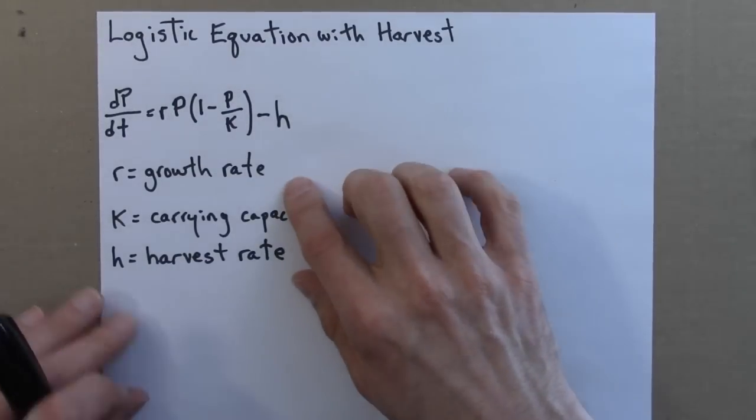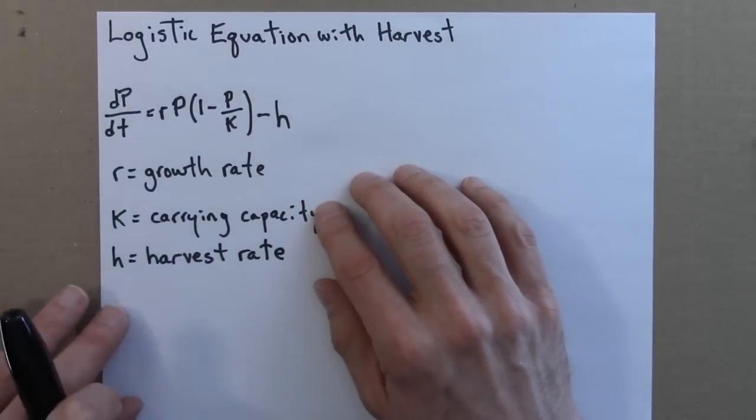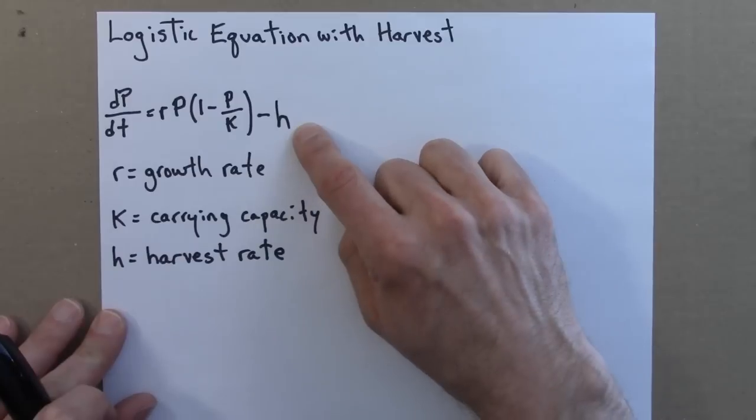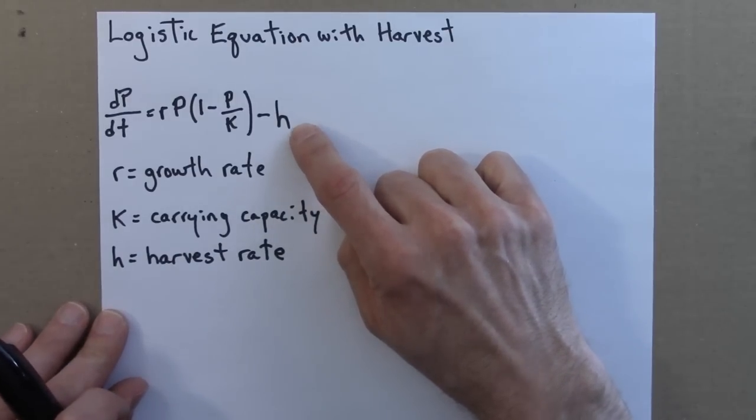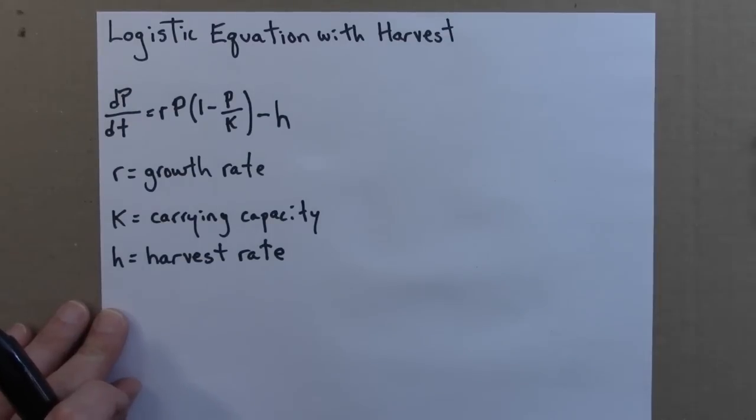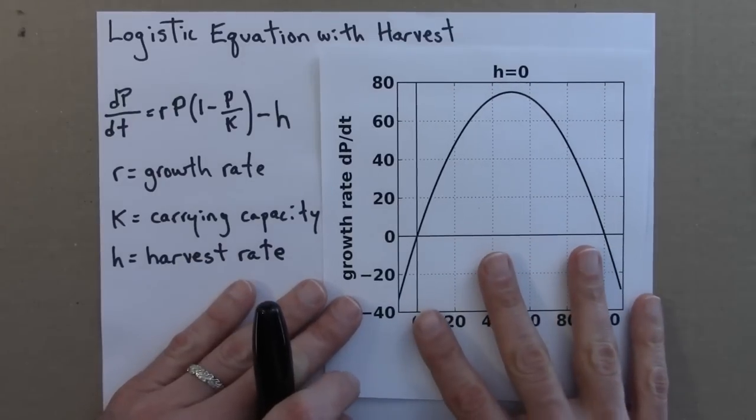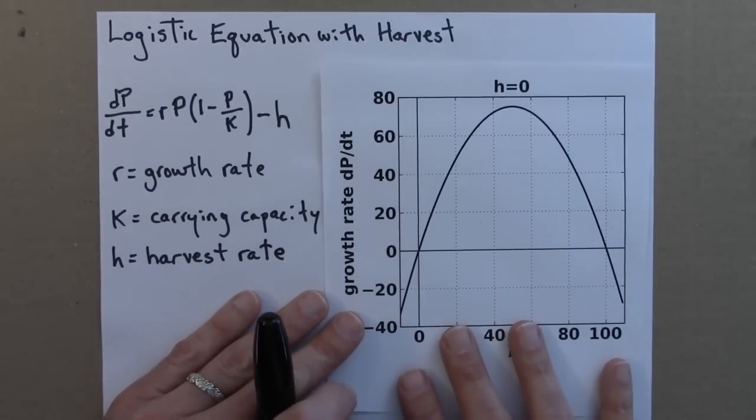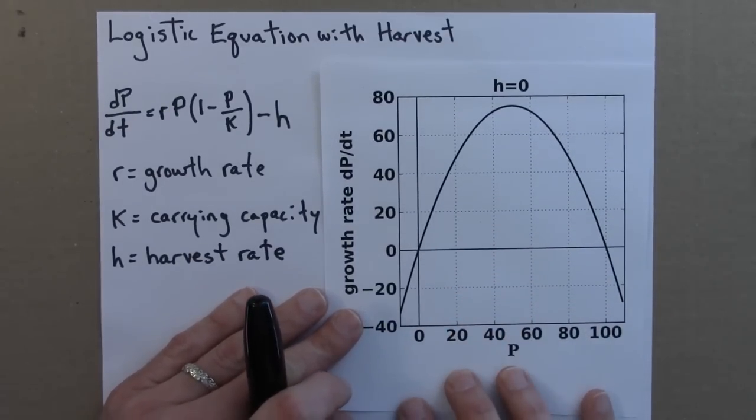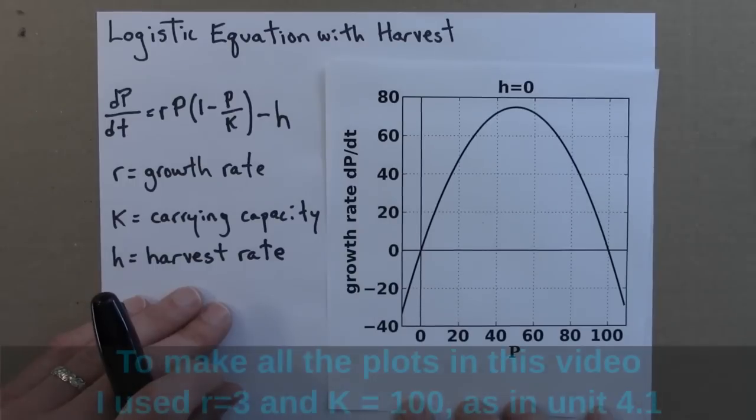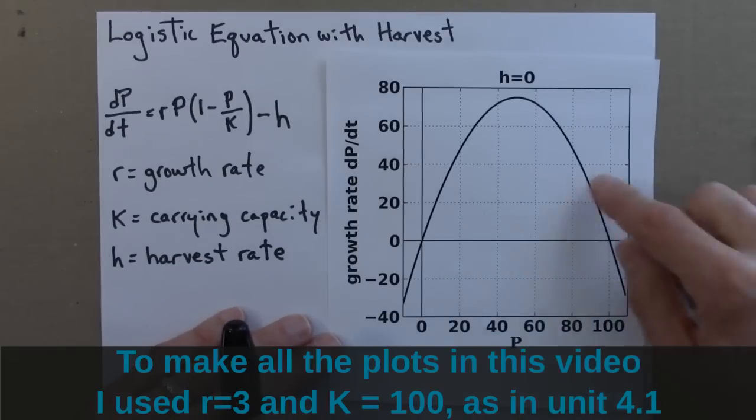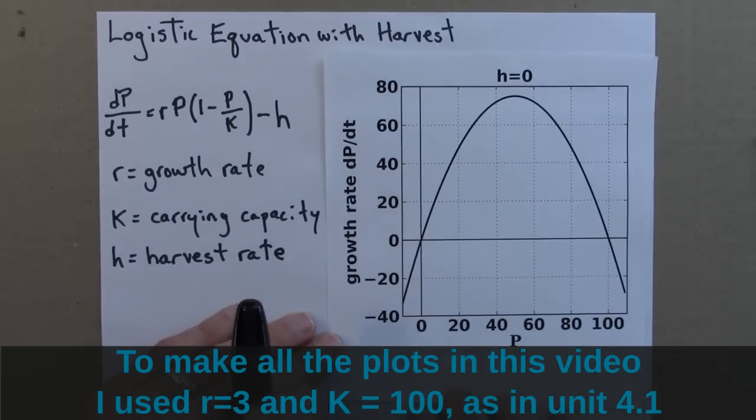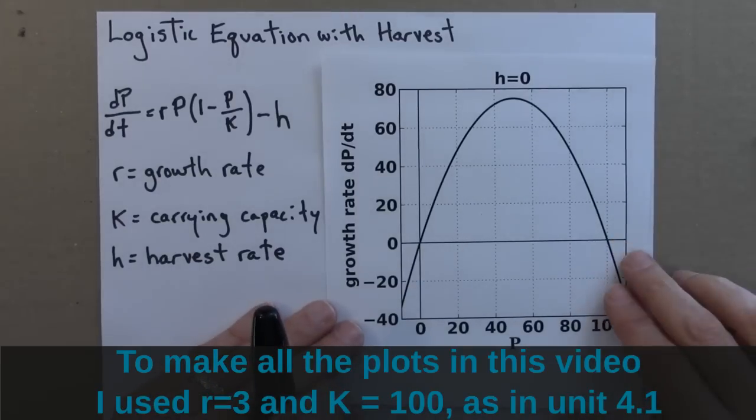So we've got logistic equation with harvest. And what I'm going to do is analyze the logistic equation using qualitative techniques for different values of h. And the first value I'm going to do will be a little bit boring or redundant because I've already looked at this. And so this is the case where h is 0. So this means we aren't harvesting any fish at all. And this is the same number as I plugged in before. So the picture is the same.